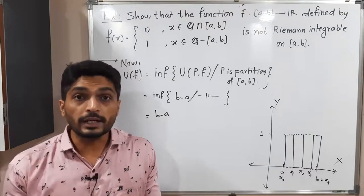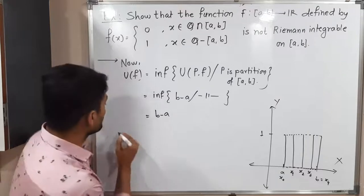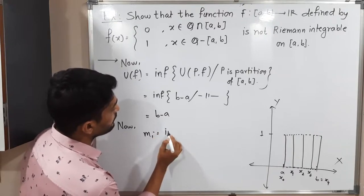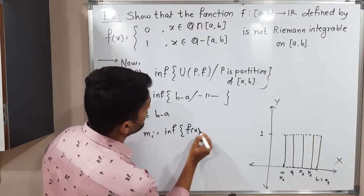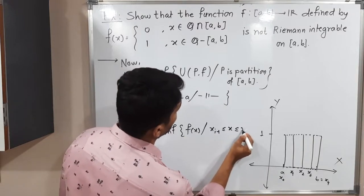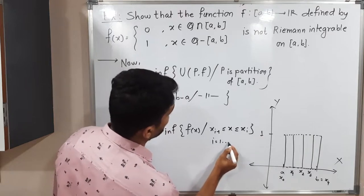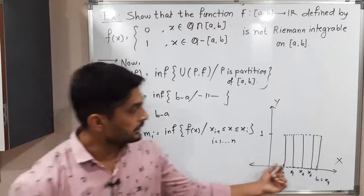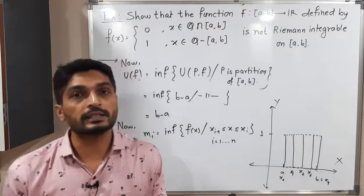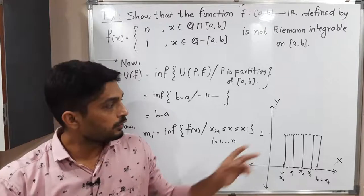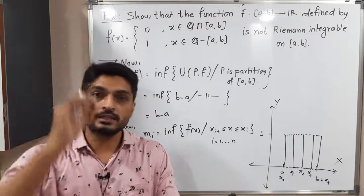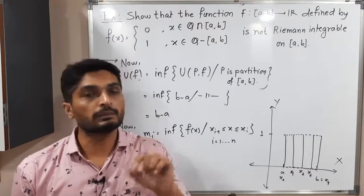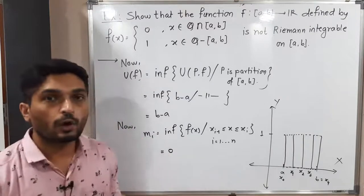To find the lower integral, we first compute small m_i, defined as the infimum of f(x) for x in [x_{i−1}, x_i], for all i from 1 to n. In each sub-interval, the function has only two values — 0 and 1 — and both values are present. Since we want the minimum (infimum) value, the answer is 0. So m_i = 0 for all i from 1 to n.